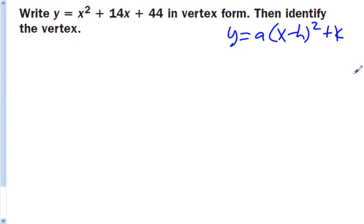This is something we've seen before. We have graphed these. Now we want to take something that's in standard form, which is ax squared plus bx plus c, and convert it or rewrite it in vertex form. To do that, you have to be able to complete the square.